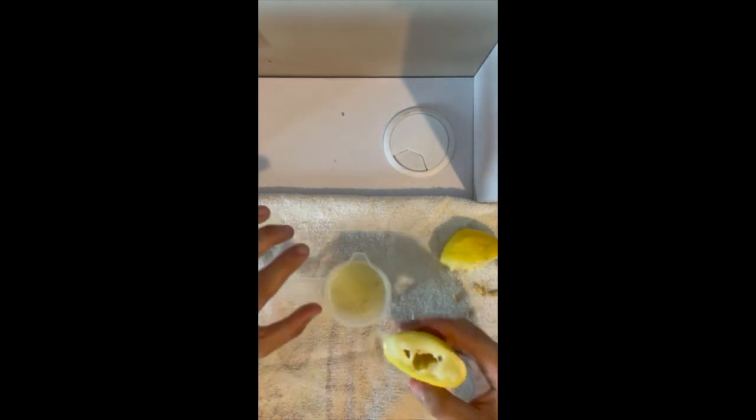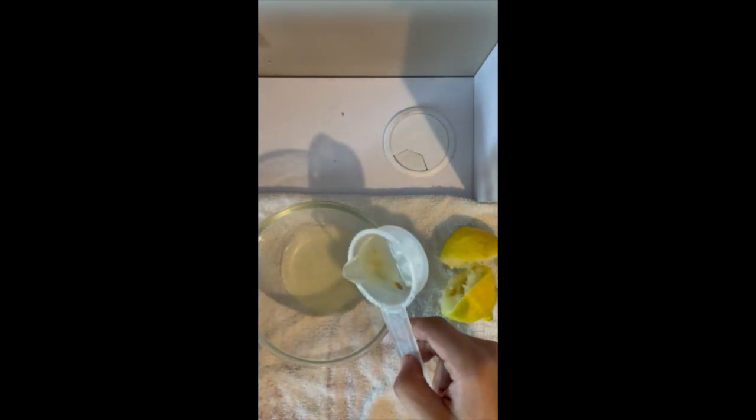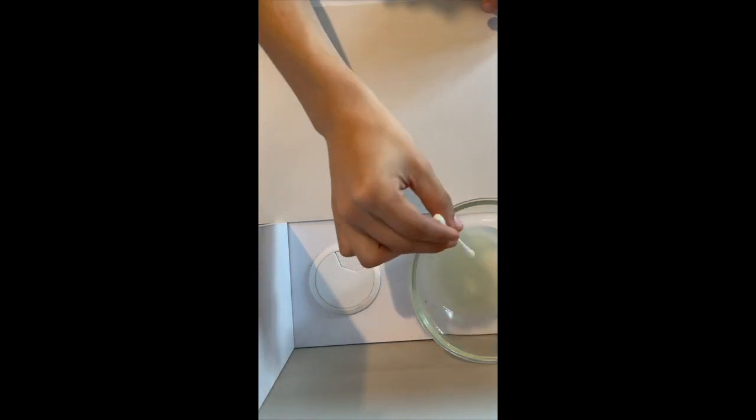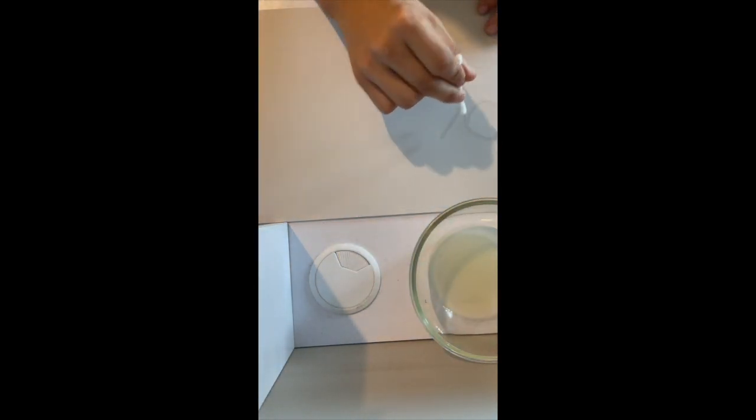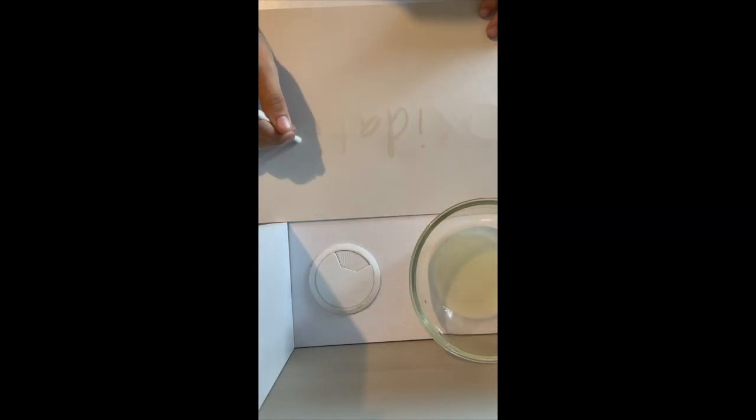Next you will want to pour it into your bowl. Now using your cotton swab and your lemon juice gather some and write your message on your cardstock paper. Make sure you write your message in the center of the paper. It will be harder to heat up afterwards if you are writing in the corners as opposed to writing it in the middle.